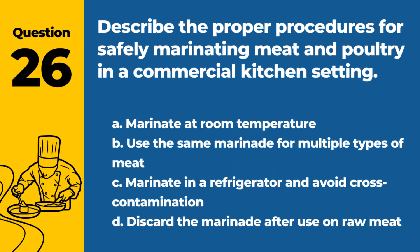Question 26. Describe the proper procedures for safely marinating meat and poultry in a commercial kitchen setting. A. Marinate at room temperature. B. Use the same marinade for multiple types of meat. C. Marinate in a refrigerator and avoid cross-contamination. D. Discard the marinade after use on raw meat. Answer: C and D. Marinate in a refrigerator and avoid cross-contamination, and discard the marinade after use on raw meat to prevent bacterial growth.